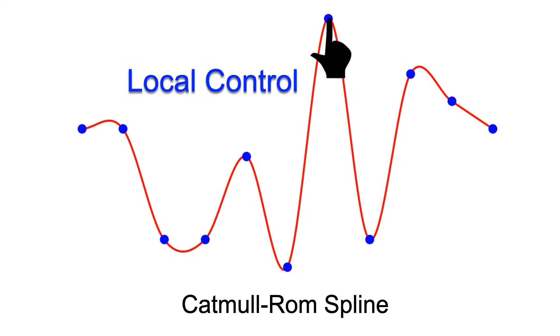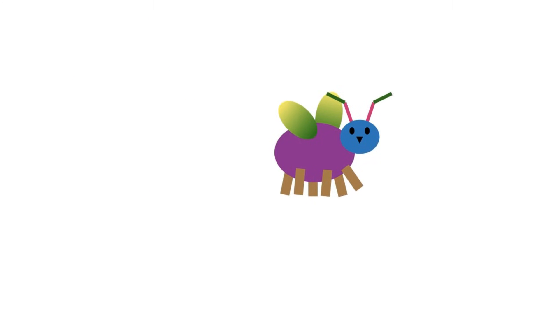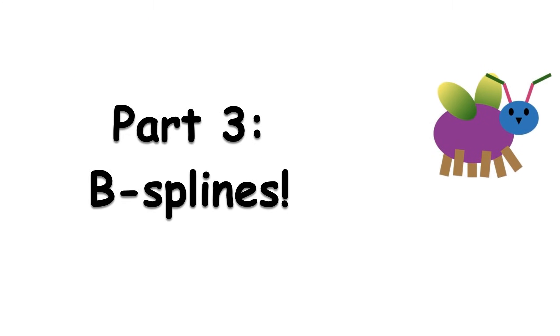For example, an animator may want to finish one section, freezing that part, and move on to the next. Stay tuned for part three. We'll cover 2D curves and B-splines, another amazing curve type.